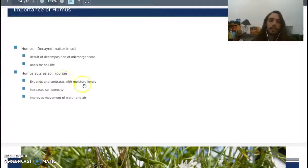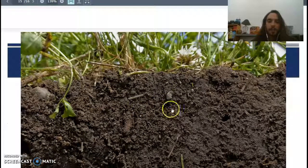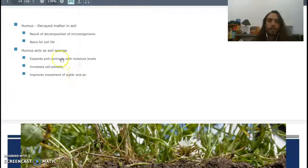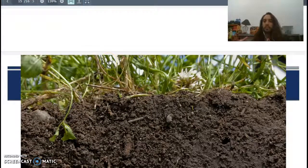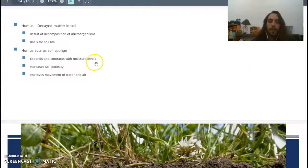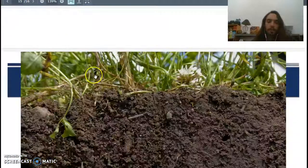So humus acts as a soil sponge. It expands and contracts with moisture levels. You can see that's got really good consistency, texture, and really good porosity. So humus increases soil porosity when it expands and contracts. When it expands you get more pores, when it contracts you get less pores. But it's pretty much reacting to moisture levels. So when we talked about good soil, how it needs to have good composition, good texture, good pore space or those peds, that's what we're talking about here. We're basically using humus as our baseline for good soil.